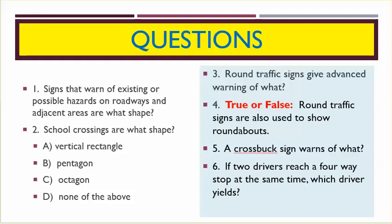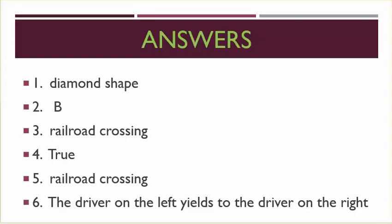Number six, if two drivers reach a four-way stop at the same time, which driver yields? Number one is diamond shape, number two is B, number three is railroad crossing, number four is true, number five is railroad crossing, number six, the driver on the left yields to the driver on the right.